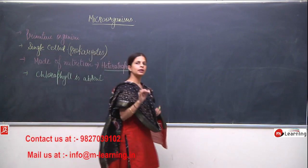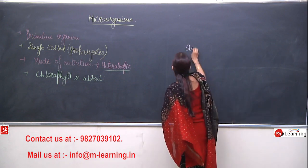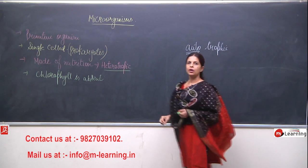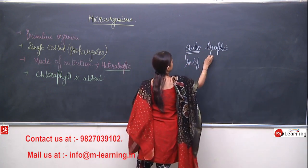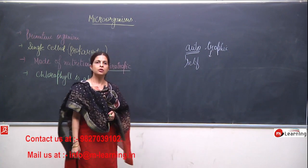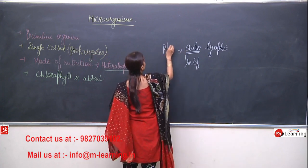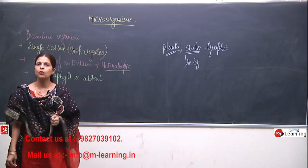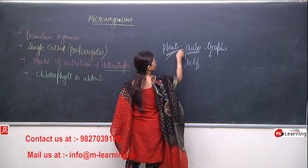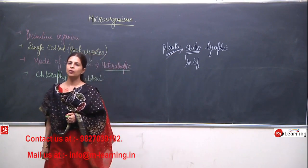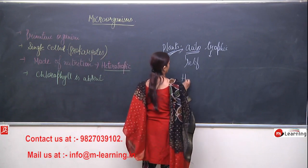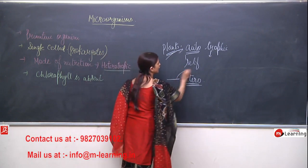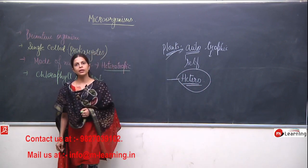Auto means self and tropic means nutrition. Plants are autotrophic because they can prepare their own food. Those which cannot prepare their own food are known as heterotrophic. Bacteria also comes under the category of heterotrophic.